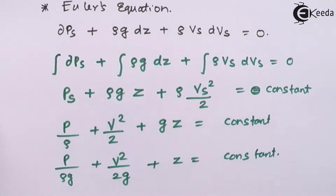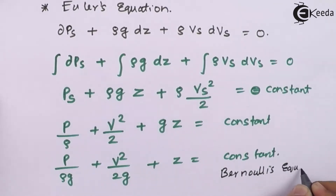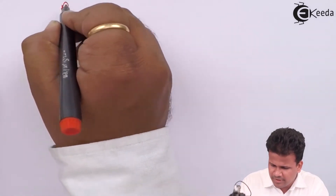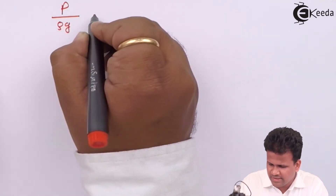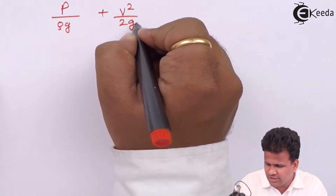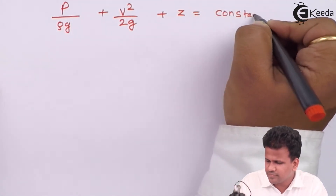This equation is called Bernoulli's equation. Let us understand it term by term. Dividing through by g, we have: P/(ρg) + V²/(2g) + z = constant.